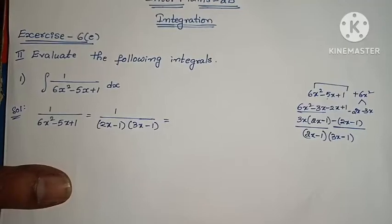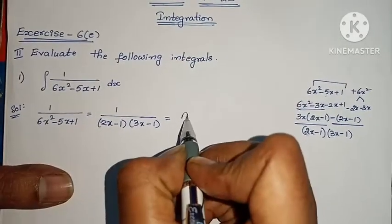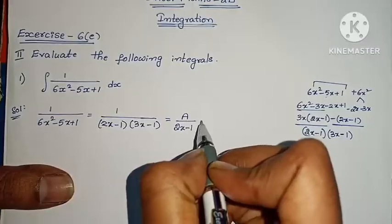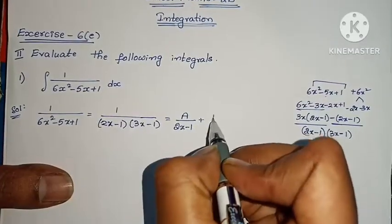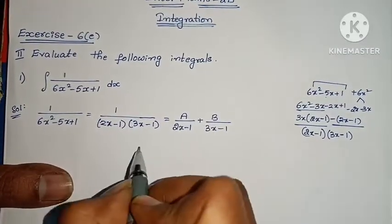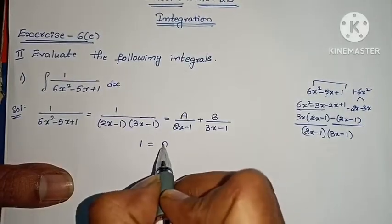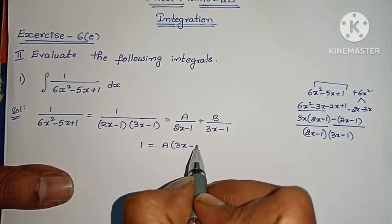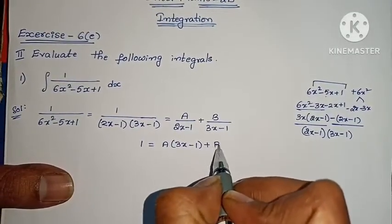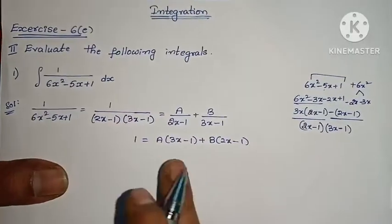Now let's convert this into partial fractions: A by (2x minus 1) plus B by (3x minus 1). Taking LCM: 1 equals A into (3x minus 1) plus B into (2x minus 1).